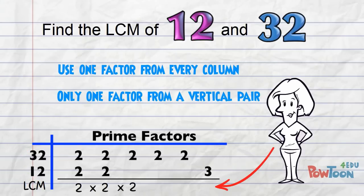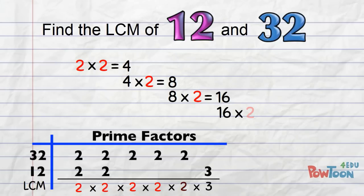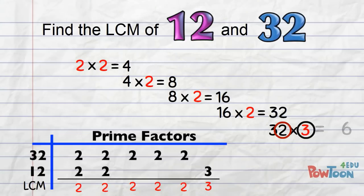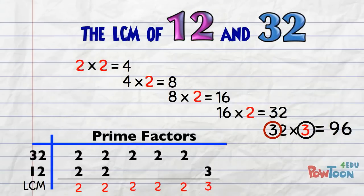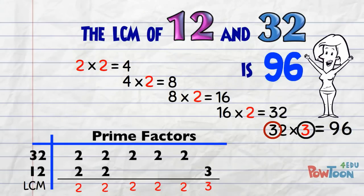The LCM of these numbers is the product of these factors: 2 times 2 times 2 times 2 times 2 times 3. Working it out: 2×2=4, ×2=8, ×2=16, ×2=32, ×3=96. The LCM of 12 and 32 is 96. And we know this is right because we already found the LCM using the multiple listing method.